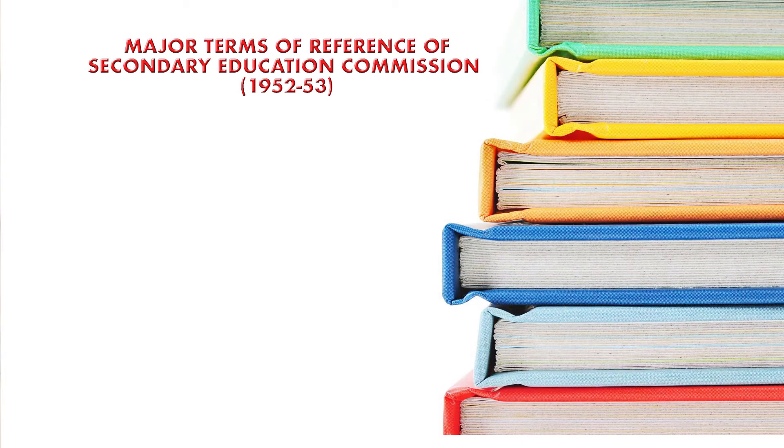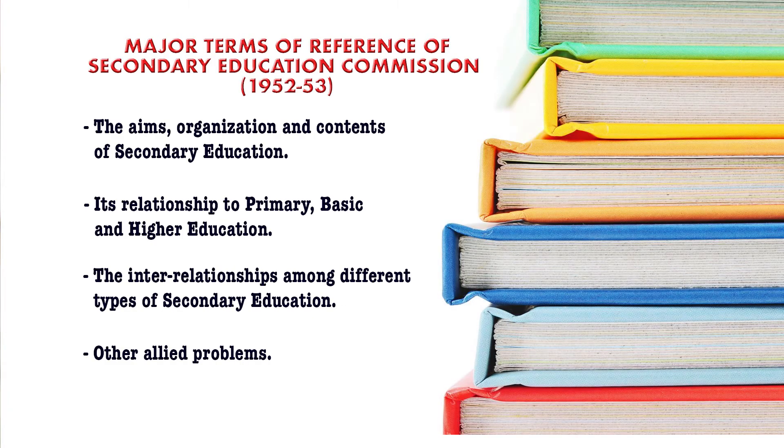The major terms of reference of the Secondary Education Commission 1952–53 were to enquire into and report on the existing position of secondary education in India in all its aspects. Then, to propose measures for its reorganization and progress with particular reference to the aims, organization, and contents of secondary education, its relationship to primary, basic, and higher education, the interrelationships among different types of secondary education, and other allied problems.